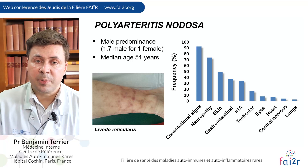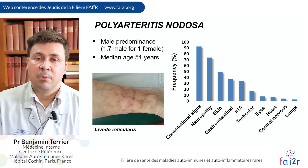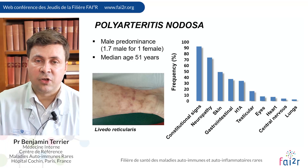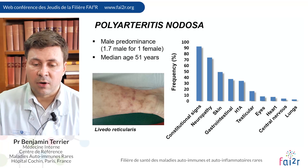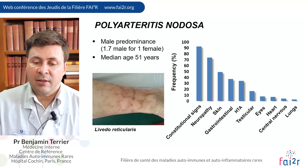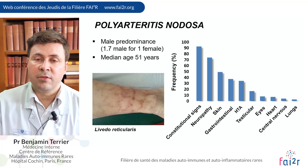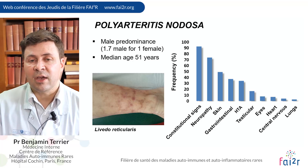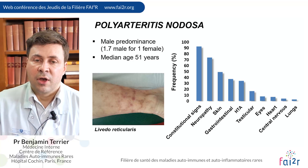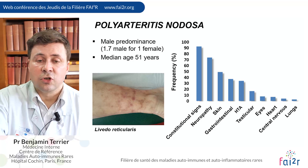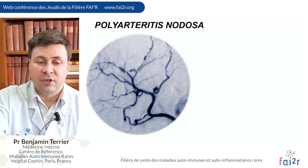Peripheral neuropathy, mainly multiple mononeuropathy with a very acute, asymmetric, and painful onset, is typically characteristic. Skin involvement, gastrointestinal involvement, and high blood pressure from vascular nephropathy can also be suggestive of the disease.